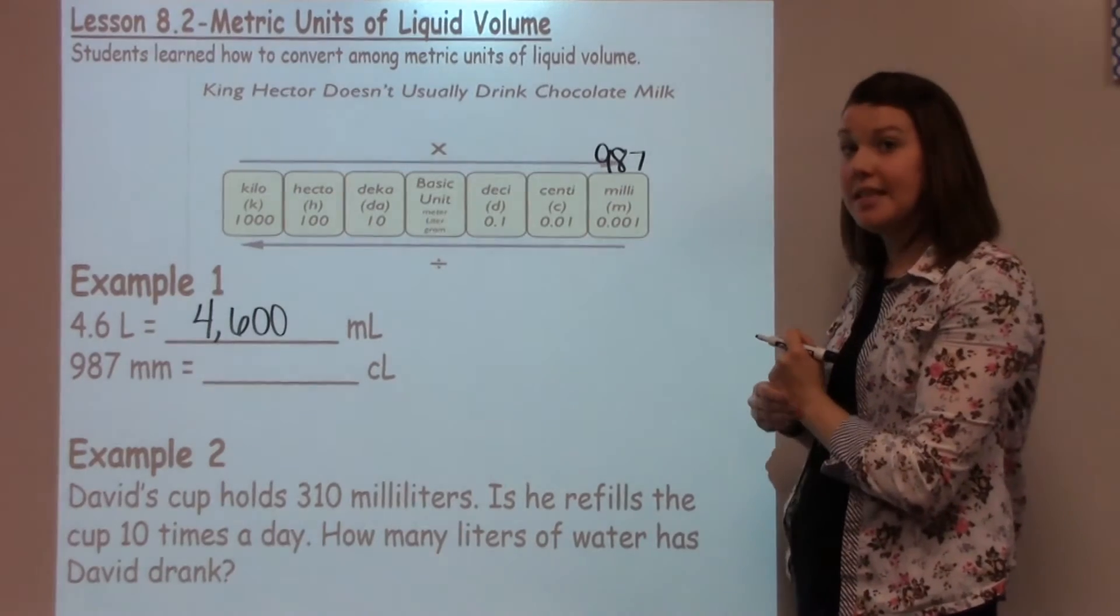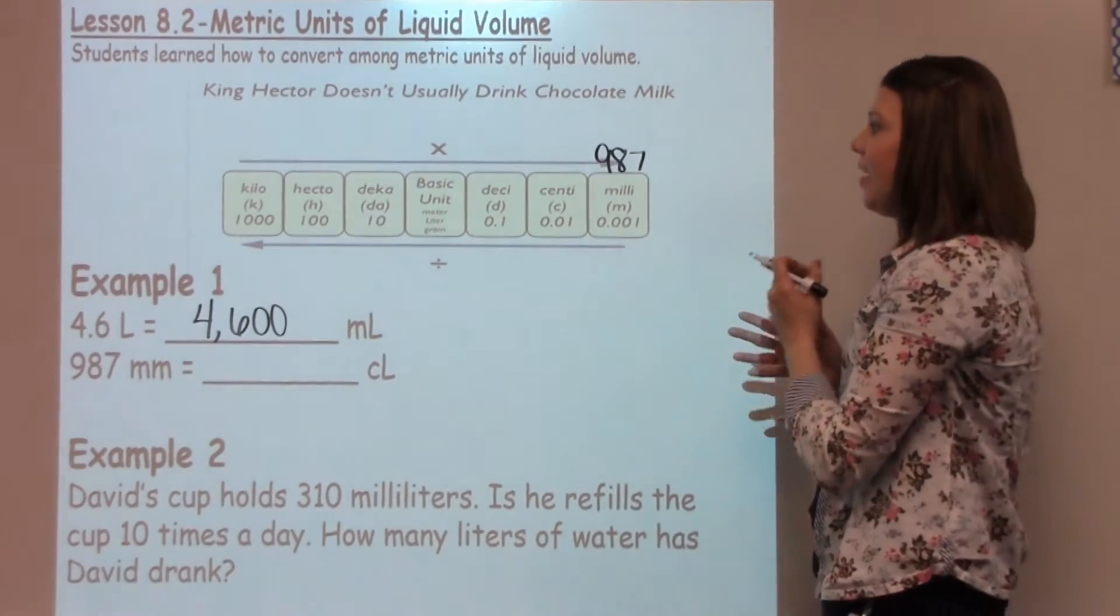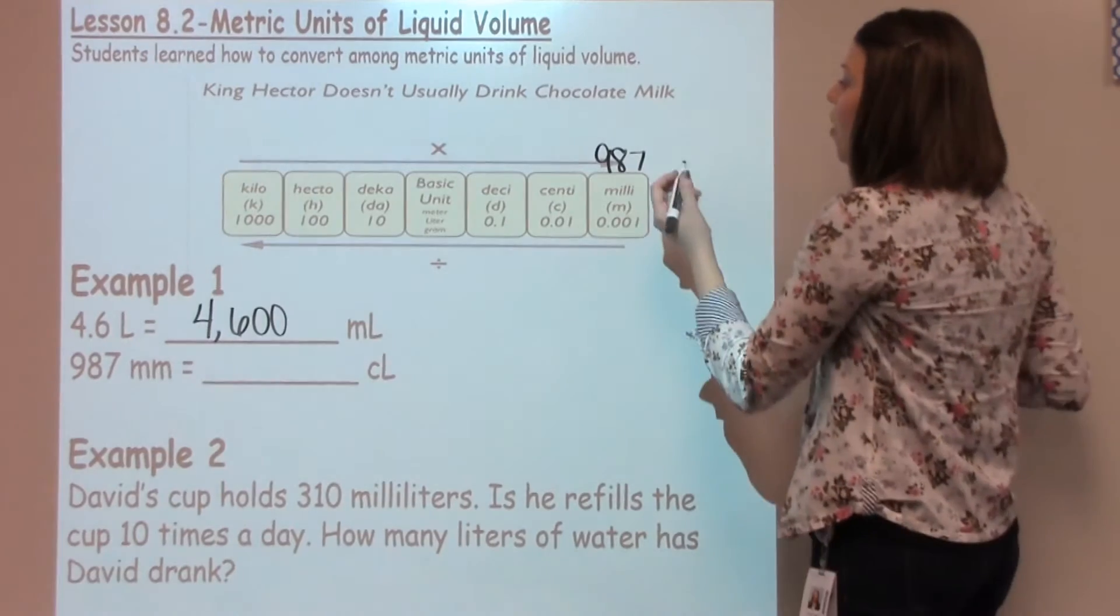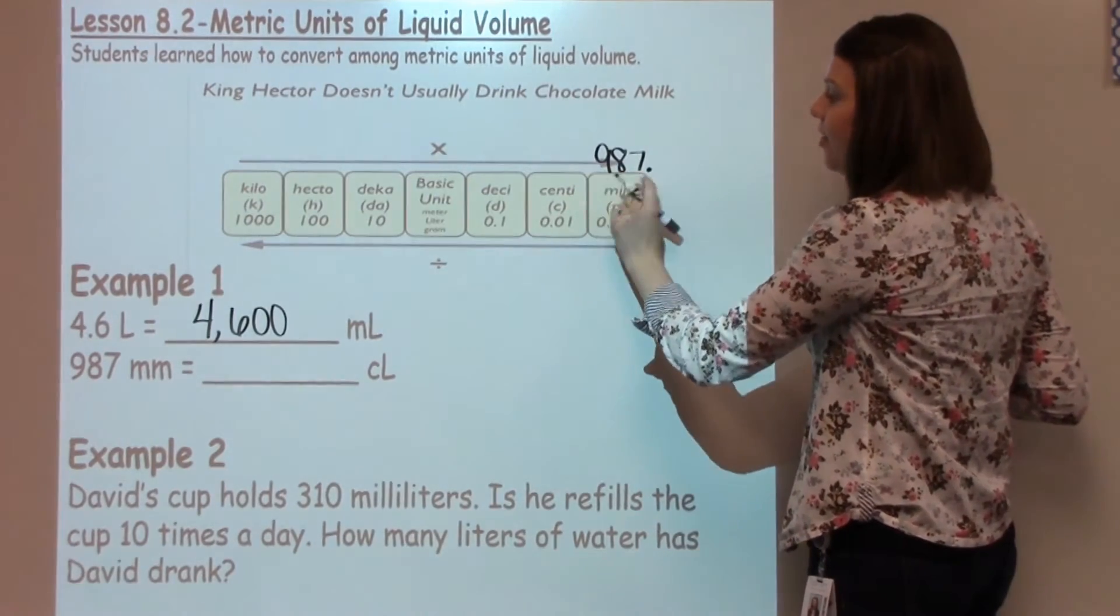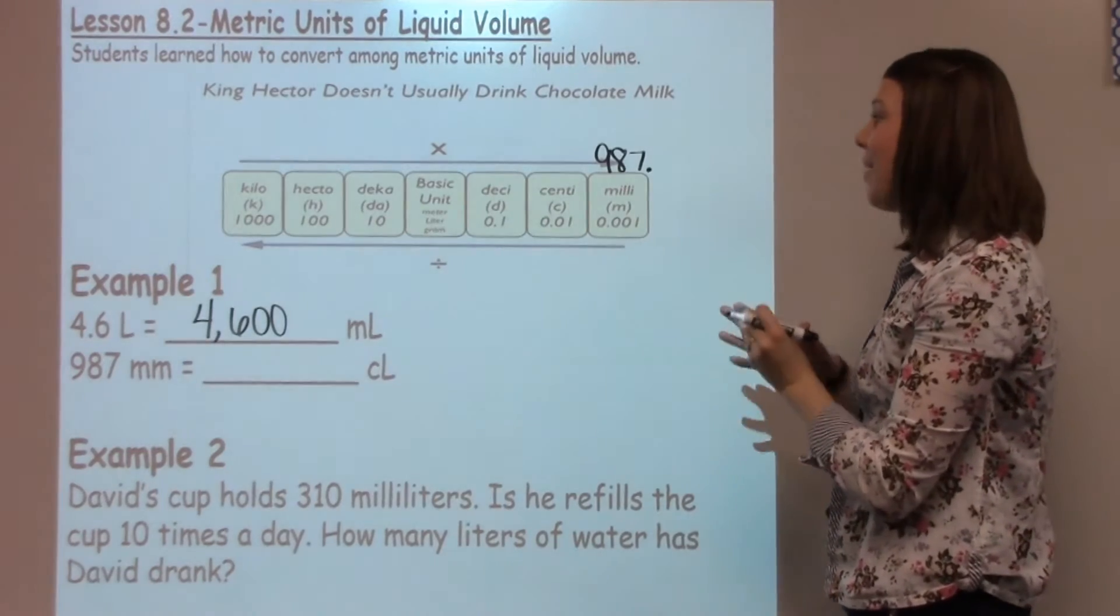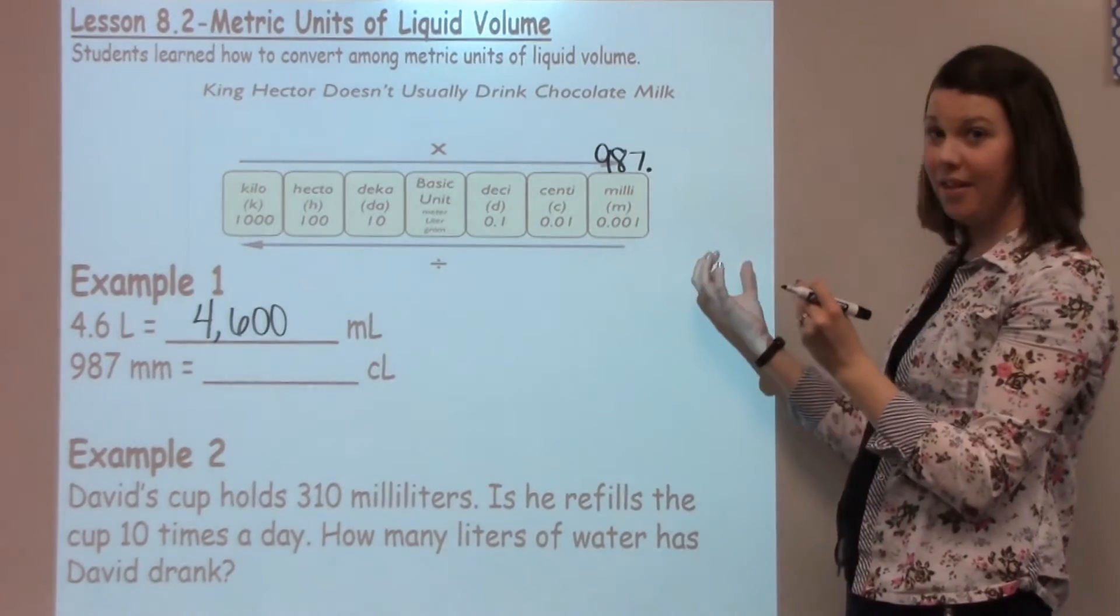So I need to be thinking where my decimal is in this imaginary number. A lot of students need a second to think about that. They sometimes struggle with where is that imaginary decimal. We'll have the student place the decimal at the very end of the number and think about that 987 is still the same as 987 with nothing following it.